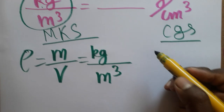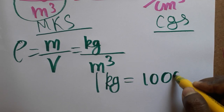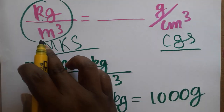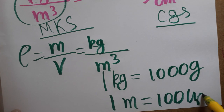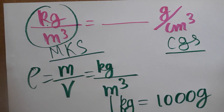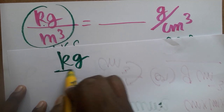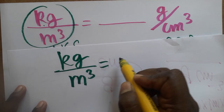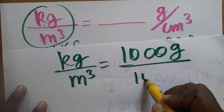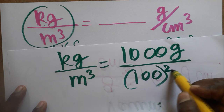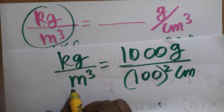One kg is equal to one thousand grams, and one meter is equal to hundred centimeters. So we are going to convert kg per meter cube. One kg is a thousand grams, and one meter is a hundred centimeters, so meter cube becomes hundred centimeter cubed.